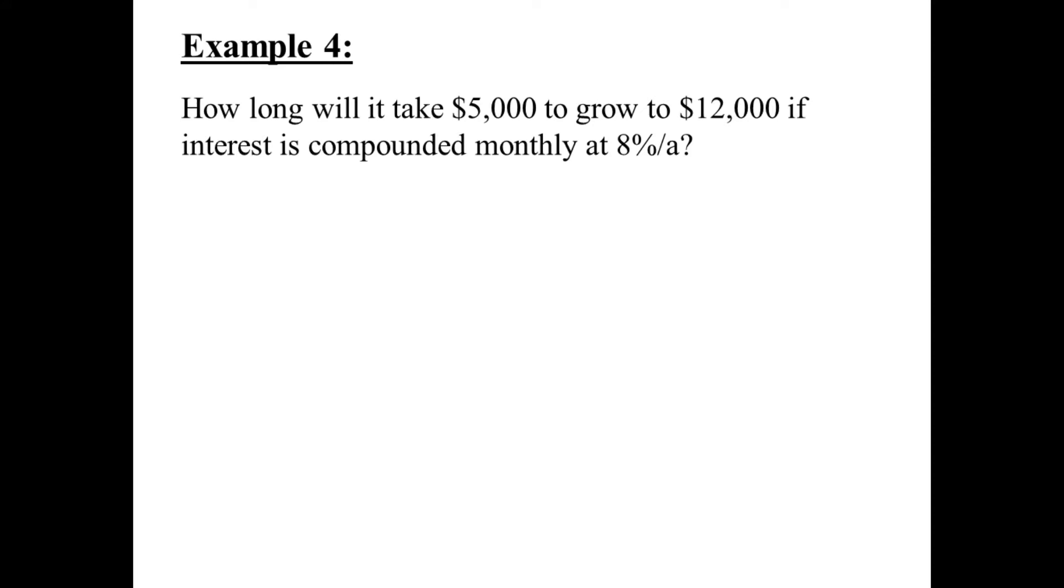Moving on. Example 4. How long will it take $5,000 to grow to $12,000 if interest is compounded monthly at 8% a year? Well, we see the word compounded. So immediately we write the formula. Now, we want to take $5,000 to grow to $12,000. So the amount after time has passed, amount is $12,000. The principal, the amount that we're going to invest, is $5,000. Monthly means 12 times a year, but we don't know for how many years. So N is a question mark, but I isn't. I is the annual rate divided by 12 times a year. So it'll be 0.08 divided by 12. And that's 0.00667.